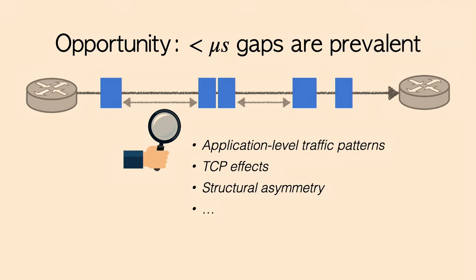OrbWeaver is driven by the observation that gaps between packets at less than microsecond resolution are ubiquitous in today's user traffic. Usable gaps can occur for many reasons including burstiness nature of application level traffic patterns, effects of TCP rate control protocols, structural asymmetry, and so on. In fact, prior studies have shown similar observations. In the end, microsecond level inter-packet gaps are ubiquitous, even in networks that apply custom TCP protocols, complex traffic engineering or prioritization schemes, and primarily handle large bulk data transfers.